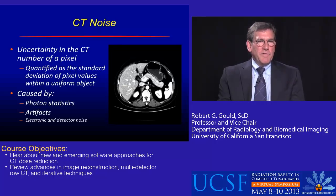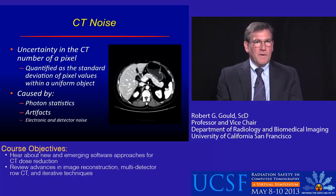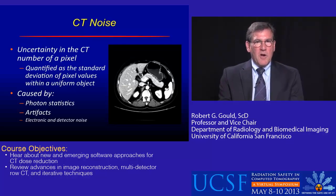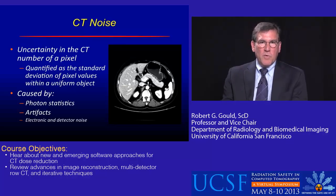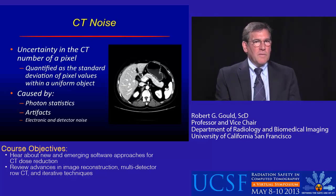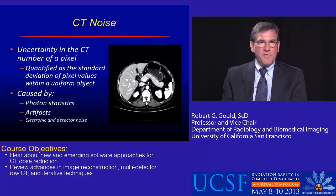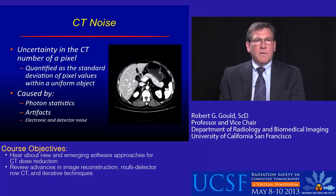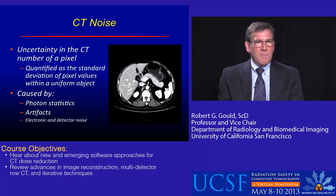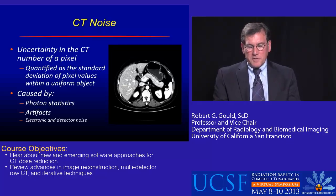The reason for the uncertainty is simply photon statistics, which is usually the dominant factor. To some extent, artifacts as well — streaking or beam hardening artifacts due to the characteristics of the x-ray beam can cause uncertainty in the CT numbers. And lastly, electronic and detector noise can also contribute.